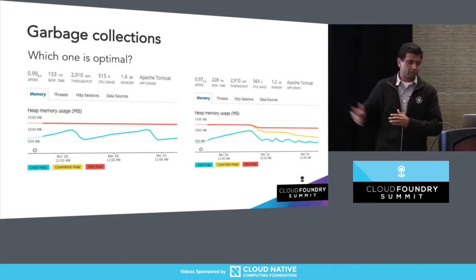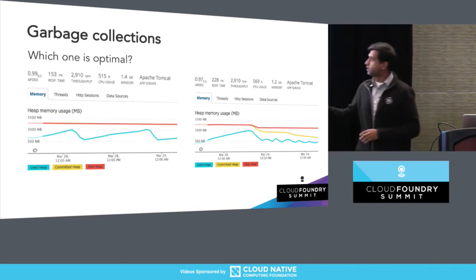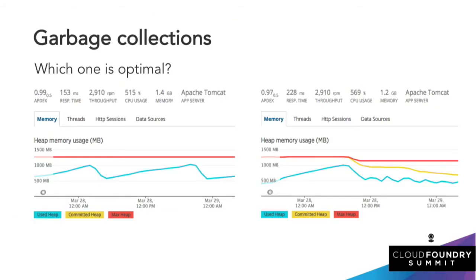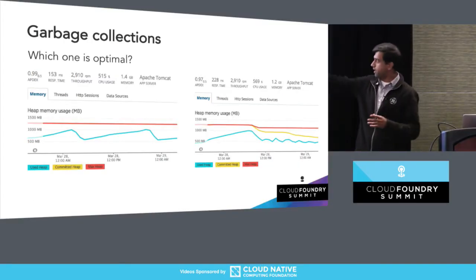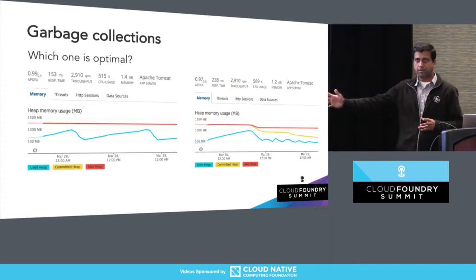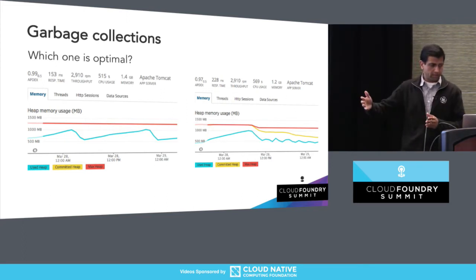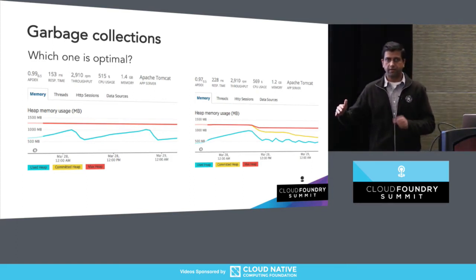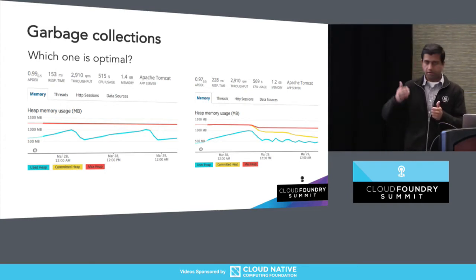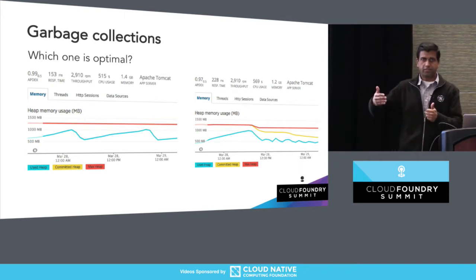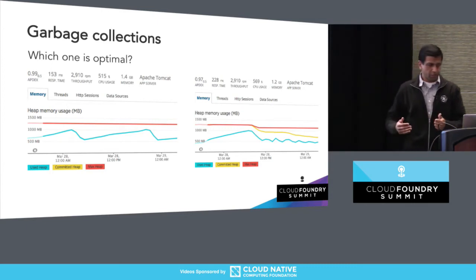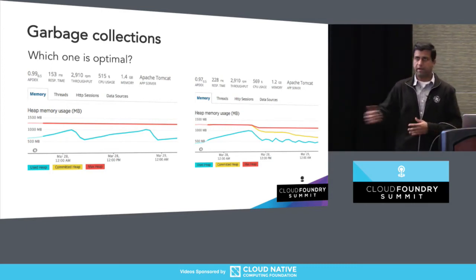This is a screenshot from one of our services. Which one do you think is more optimal — the one on the left or the one on the right? I would say the one on the left. It's the same service but using different build packs, and we noticed different patterns of garbage collection. The sawtooth pattern on the left is the most optimal — the garbage collection is kicking in at the right frequency, consistently. On the right, the committed heap is slowly going down, which is a clear indication of a memory leak, and garbage collection is happening at more frequent intervals, collecting less and less each time.